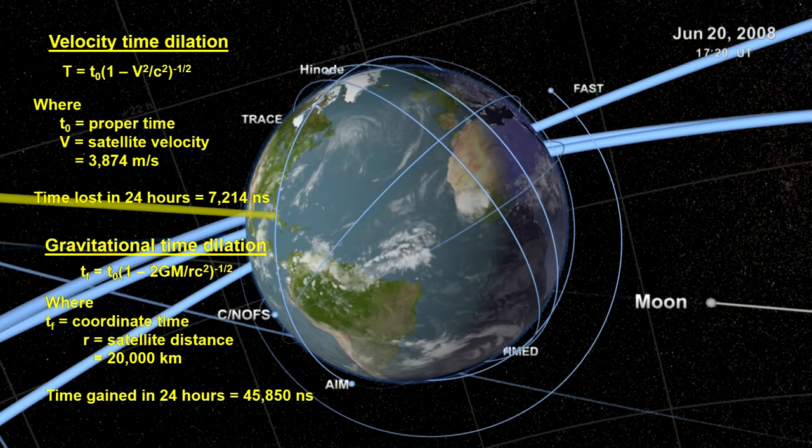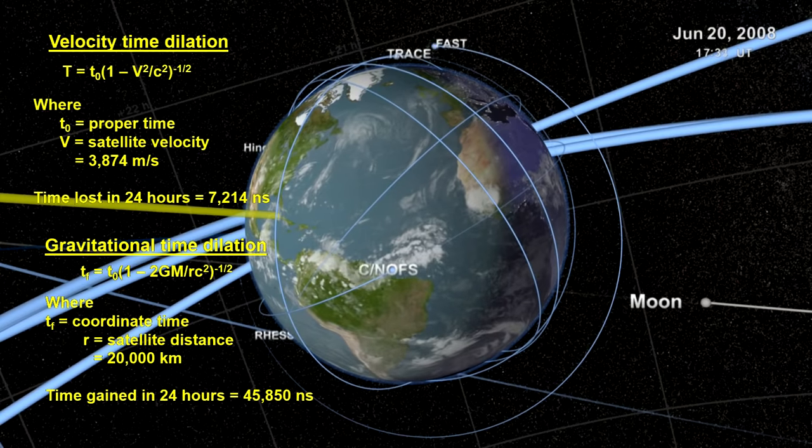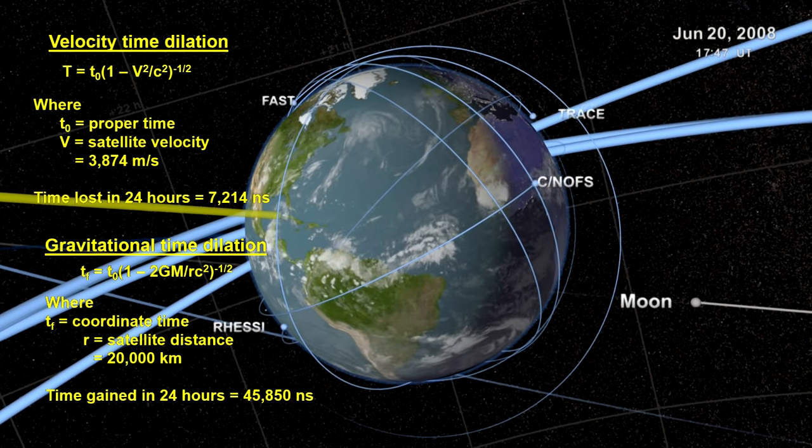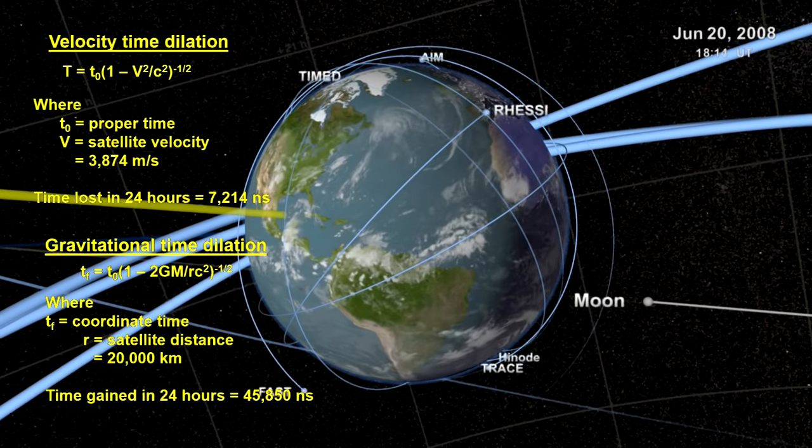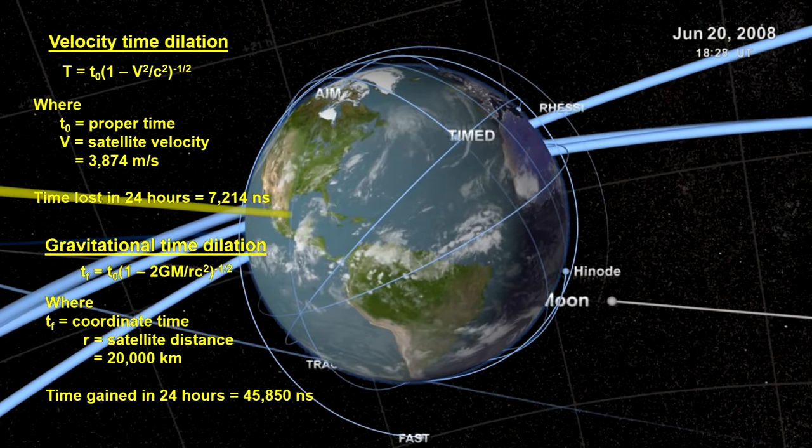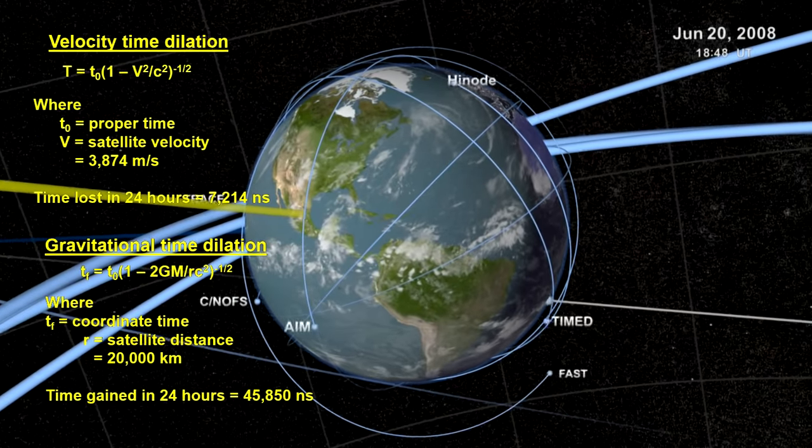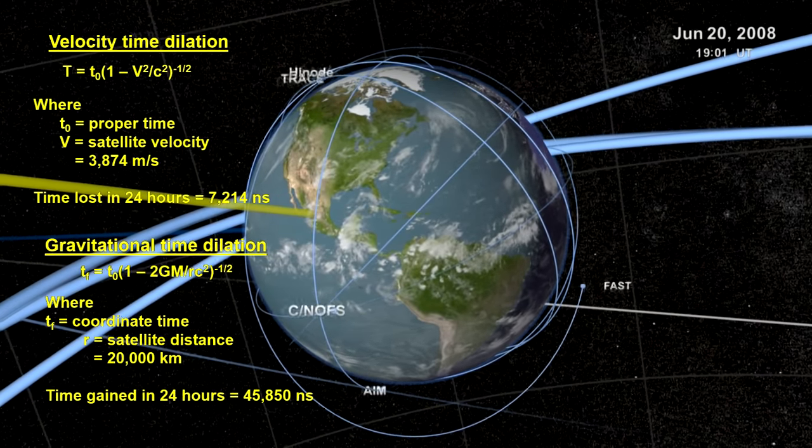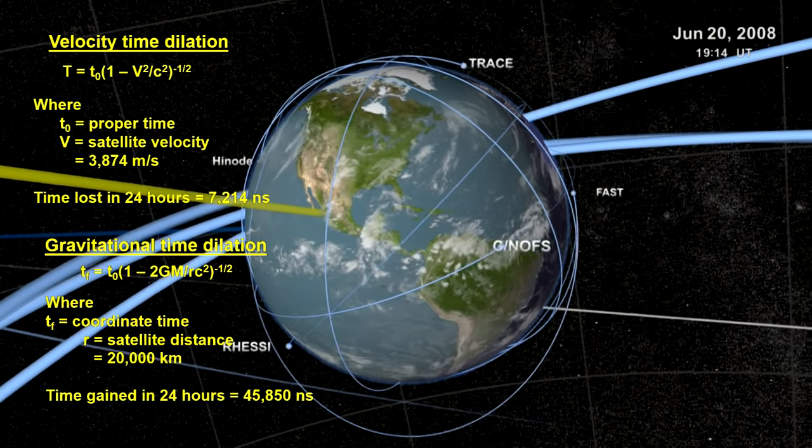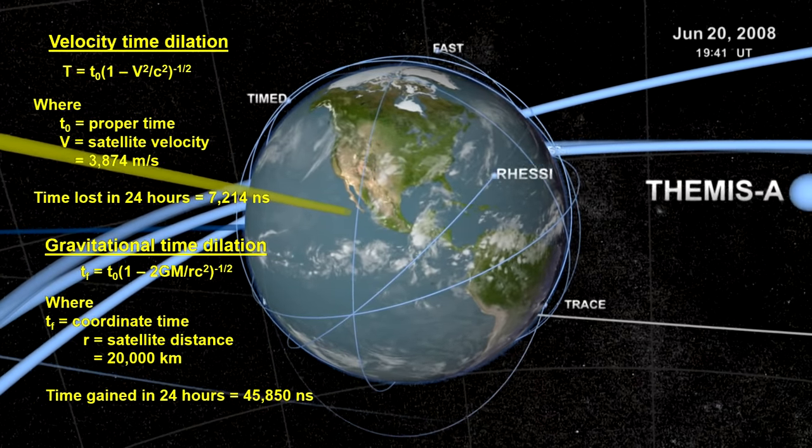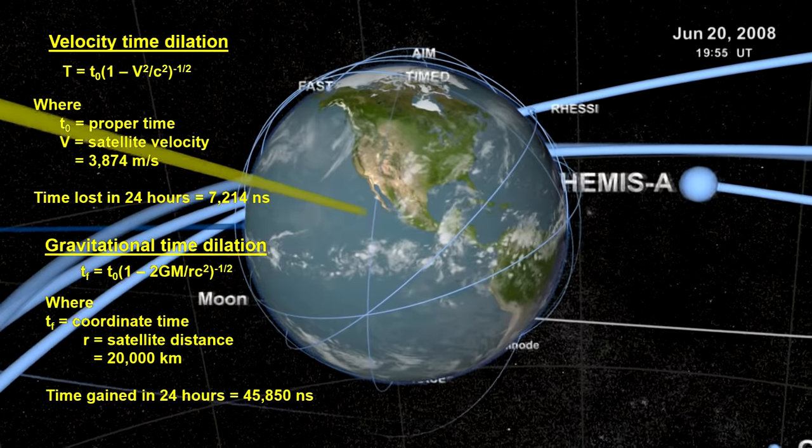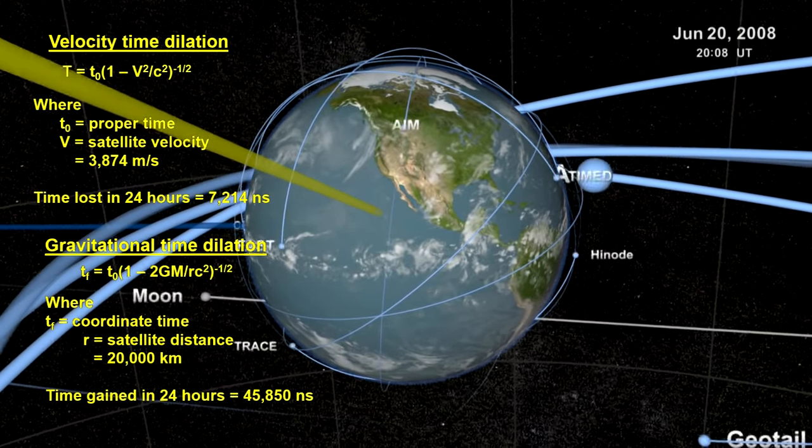They must also take into account gravitational time dilation, due to their being further away from the Earth than clocks on the ground. Based on the Schwarzschild metric, calculations show that the satellite's clocks will gain over 45,000 nanoseconds a day due to this general relativity effect. The accuracy of our GPS system is strong evidence for the correctness of general relativity.